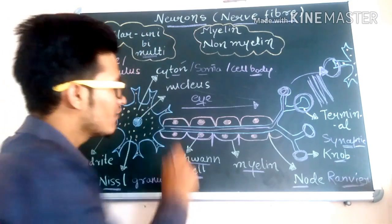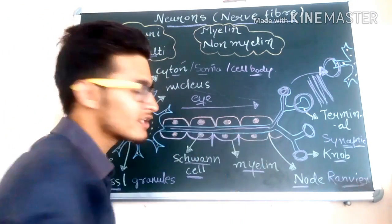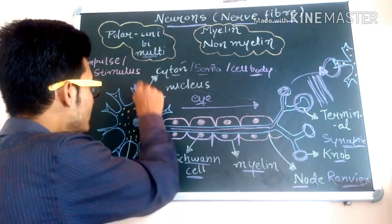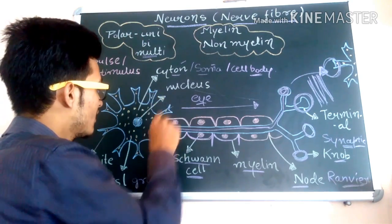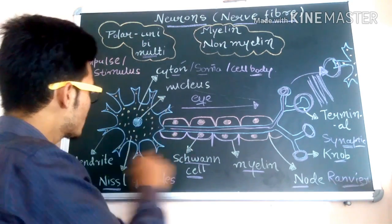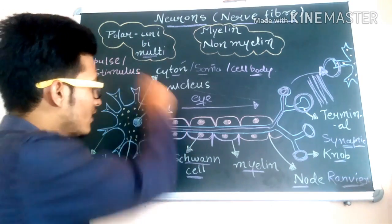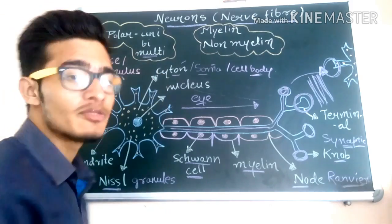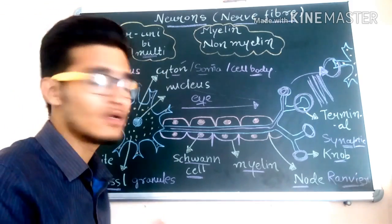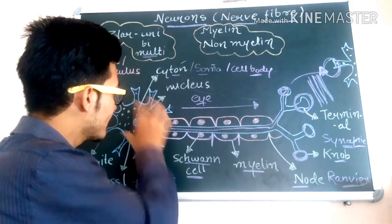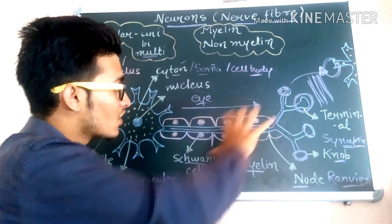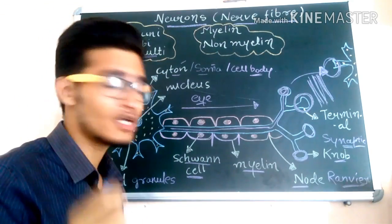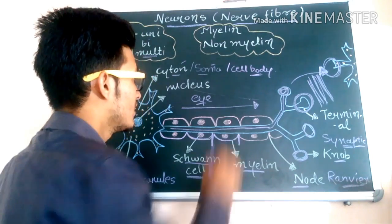Multipolar neurons have only one axon but the dendrites may be several. This particular neuron is a multipolar neuron, and these kinds of multipolar neurons are present in the cerebral cortex region.